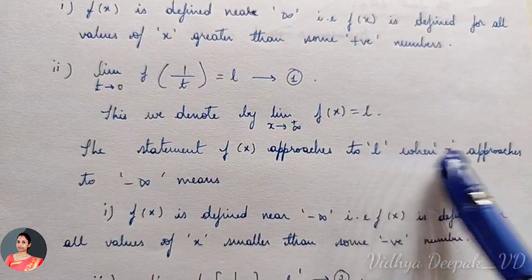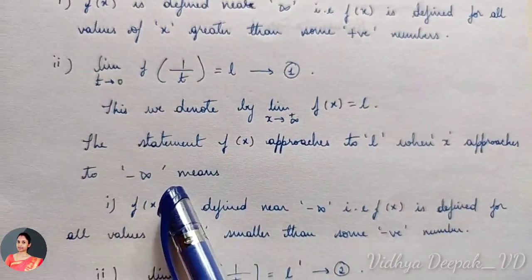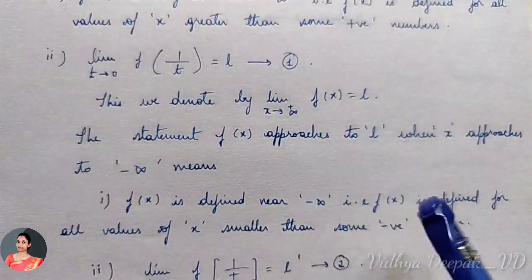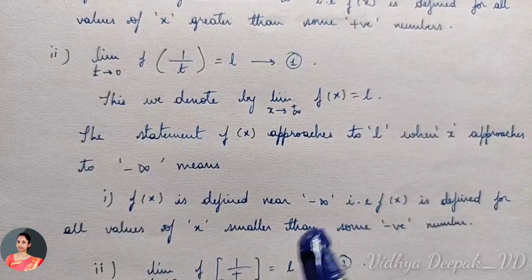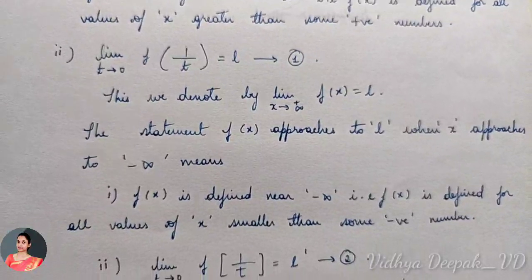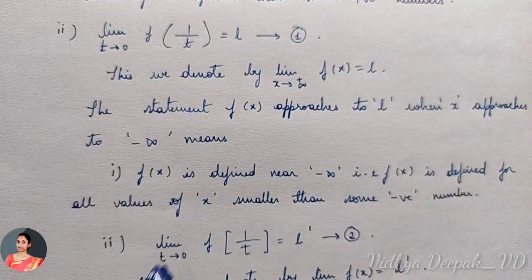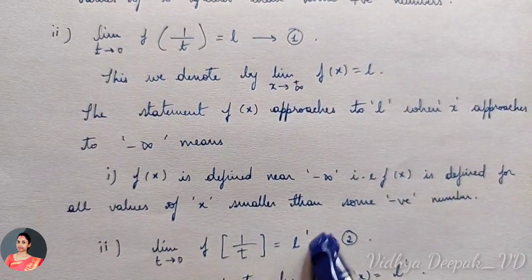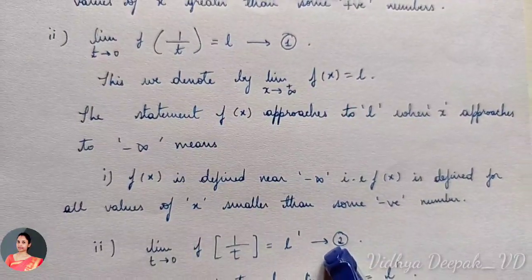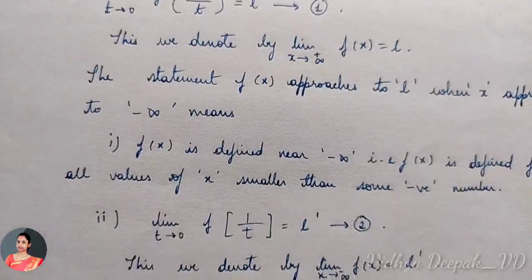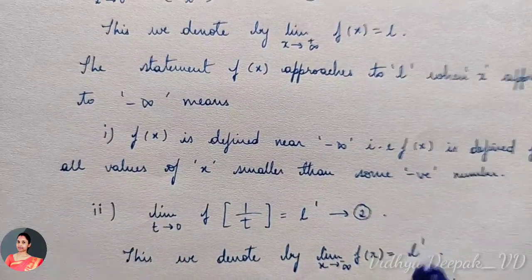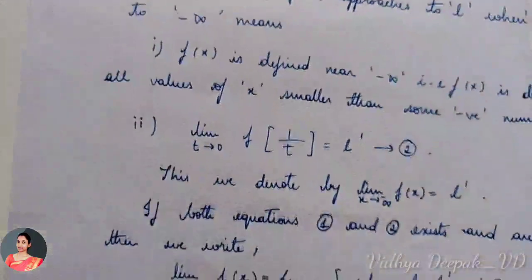Now the statement f(x) approaches L' as x approaches minus infinity means f(x) is defined near minus infinity — that is, f(x) is defined for all values of x smaller than some negative number. We take limit as t tends to 0 of f(1/t) to be some number L'. I am considering this to be equation 2. We denote this by: limit as x tends to minus infinity of f(x) is equal to L'.